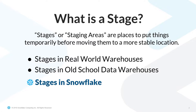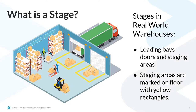The concept of stages comes from real-world warehouses. In this illustration of a warehouse, we can see two loading bays — the places with doors that trucks back up to for loading or unloading goods. Notice that each loading bay has an area of the floor marked with a yellow rectangle. Anything placed into the staging area is there because it's about to be loaded into a truck, or it's being unloaded and will end up on the shelves. These yellow marked staging areas are places where goods are put temporarily before being moved onto the shelves for storage, or onto a truck for transit to some other location.